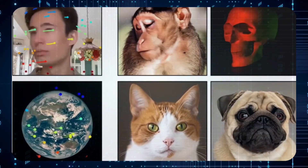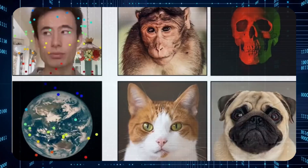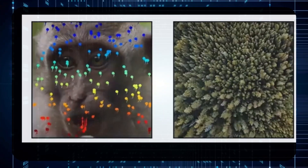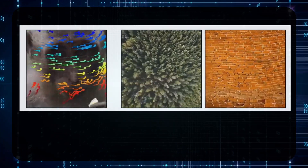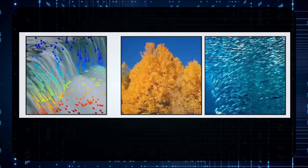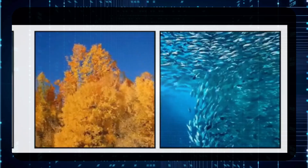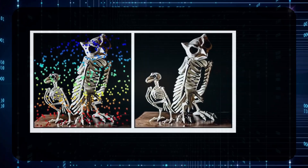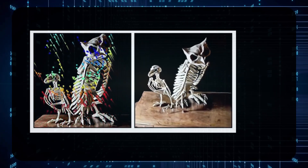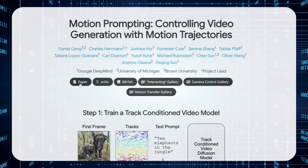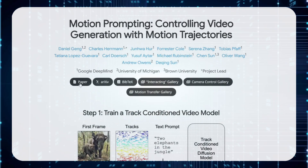But the real showstopper? You can use a reference video to imbue a completely different image with motion and life. Observe this monkey engrossed in its meal — now watch as those towering trees or that solid brick wall start to mimic its munching movements in a mesmerizing dance. It's peculiar, it's surreal — it's the enchanting magic of AI. If you use a waterfall as a reference, you can make those autumn leaves rustle or make a school of fish swim and dance to its rhythm. It's like giving you the power to remix reality. Right now we've only got a tantalizing glimpse through a research paper, but I'll be shouting it from the rooftops the moment they release the code. You can delve deeper into the details by following the link in the description below.